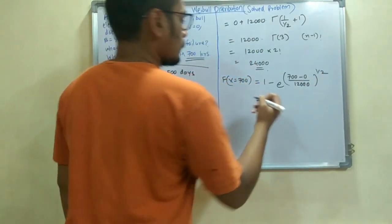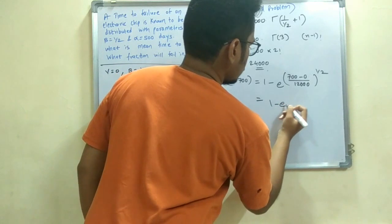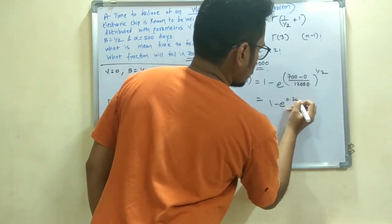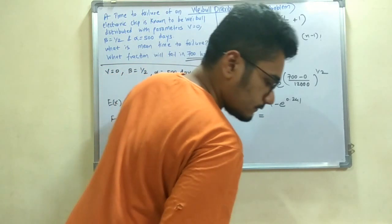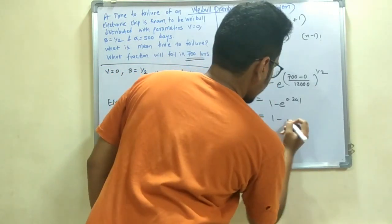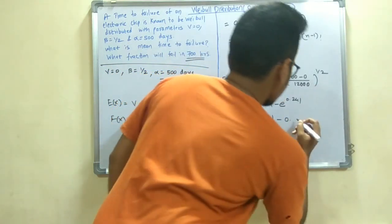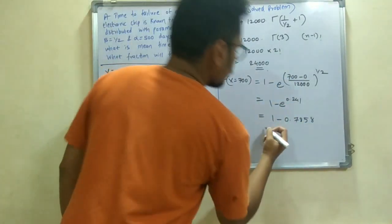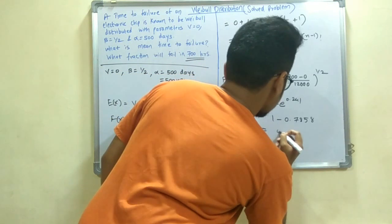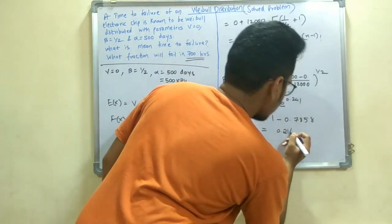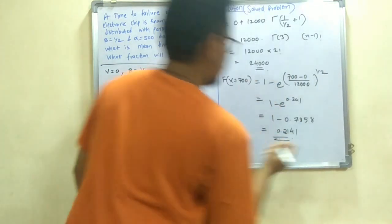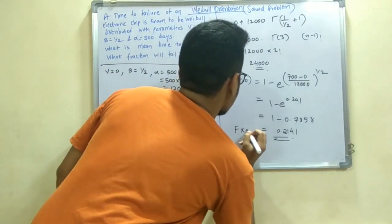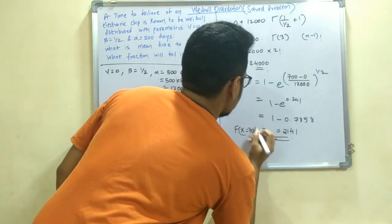So when you solve this, you will get 1 minus e raised to 0.241. And this value comes out to be 1 minus 0.7858. And when you deduct from this, you will get the value as 0.2141. So this is the value at F(x) equals 700.